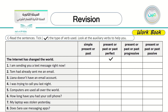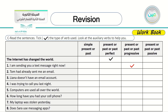Number one: 'I am sending you a text message right now.' This goes in the present or past progressive category — present progressive. Once you see the '-ing' ending, you know it's progressive.